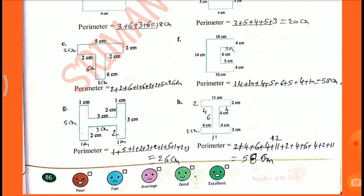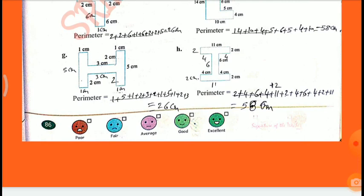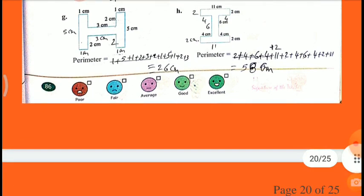E: perimeter equals 2 plus 2 plus 6 plus 1 plus 6 plus 2 plus 2 plus 5 equals 26 cm. F: perimeter equals 14 plus 10 plus 4 plus 5 plus 6 plus 5 plus 4 plus 10 equals 58 cm. G: perimeter equals 1 plus 5 plus 1 plus 2 plus 3 plus 2 plus 1 plus 5 plus 1 plus 2 plus 3 equals 26 cm. H: perimeter equals 2 plus 4 plus 6 plus 4 plus 2 plus 11 plus 2 plus 4 plus 6 plus 4 plus 2 plus 11 equals 58 cm.